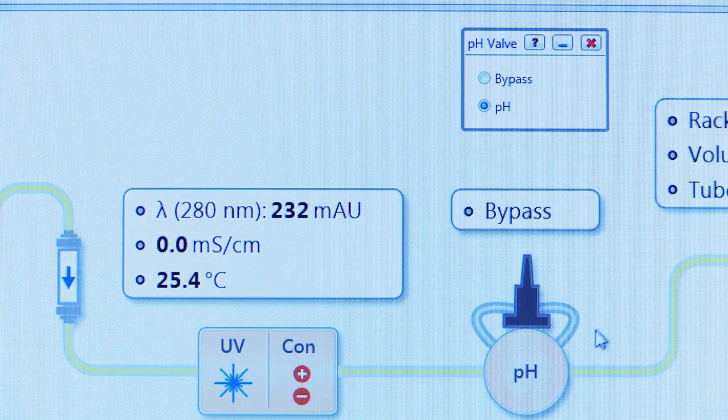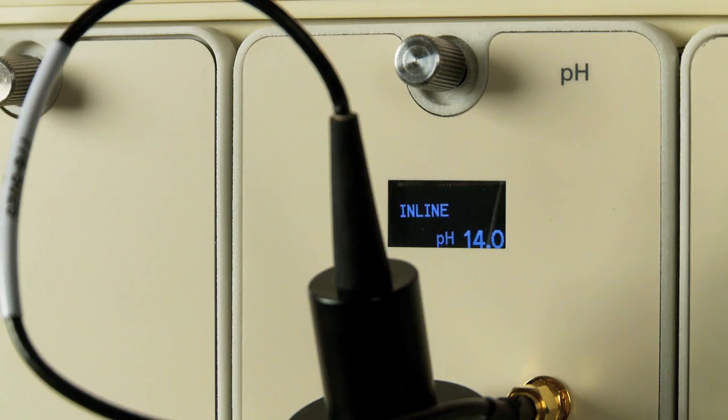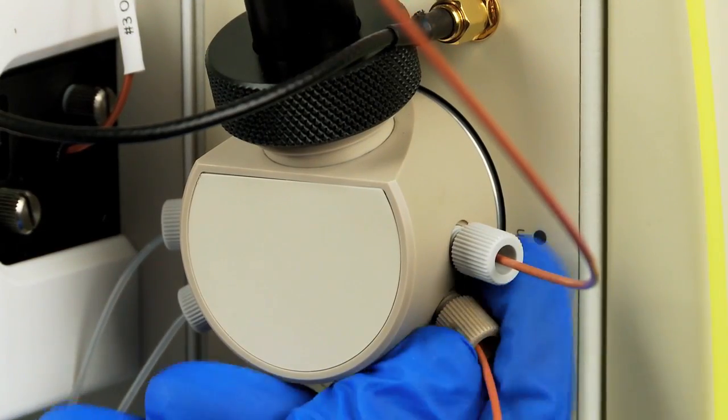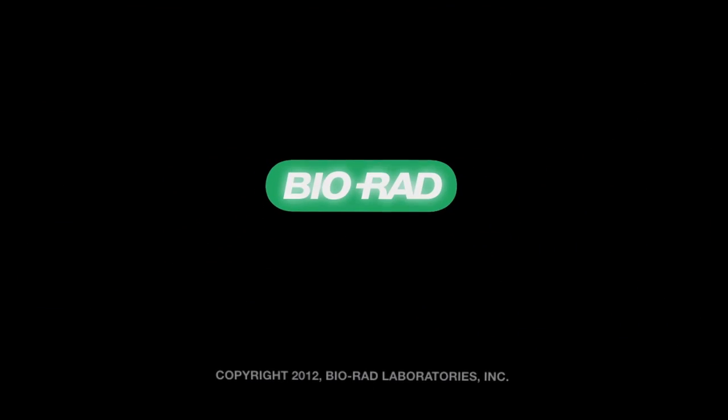Switch back to pH position to ensure the valve is in line with your flow path. Finally, make all the plumbing connections necessary for the configuration of your instrument.